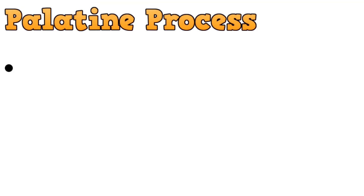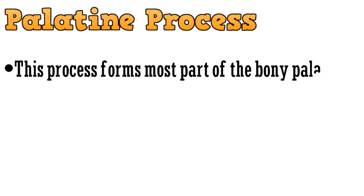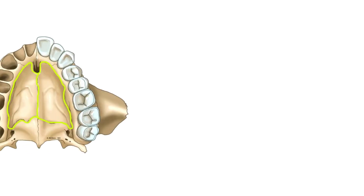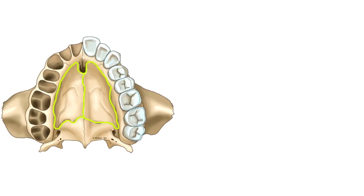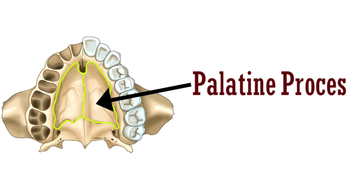The third process is the palatine process. This process forms the most part of the bony palate by joining the contralateral process in the midline. The yellow outlined part is the palatine process, and it is joined by the contralateral process in the midline.